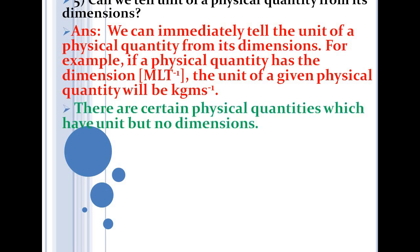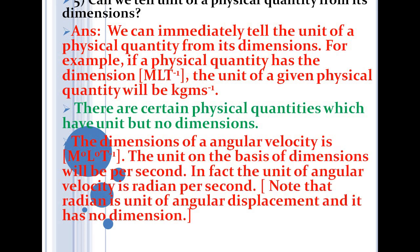There are certain physical quantities which have no dimension. For example, the dimension of angular velocity is T⁻¹, so on the basis of dimension its unit would appear to be per second. But in fact the unit of angular velocity is radian per second. Angular displacement has a unit (radian) but no dimension. So in some cases we can tell the unit from the dimension, but it is not true for all cases, because some physical quantities have units but no dimensions.